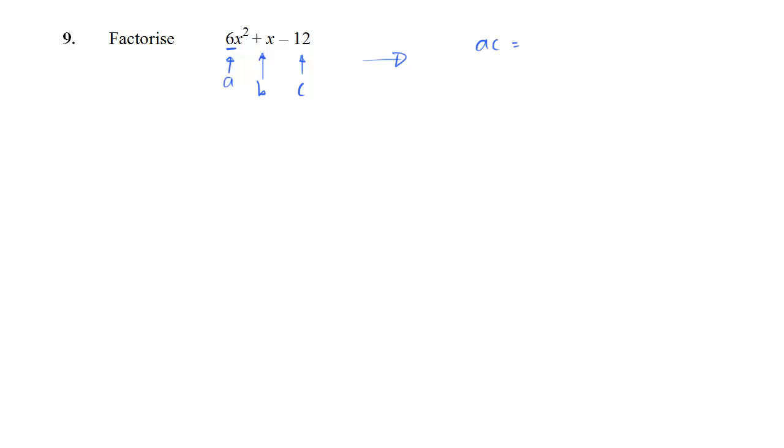So we write down what a times c is. In this case, 6 times minus 12 is minus 72. And we write down the value of b, which is just 1. And what we're looking for is two numbers which are going to multiply to give me minus 72, and they will add to give me 1.